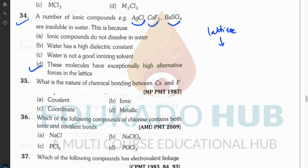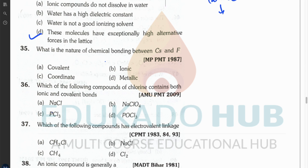Question thirty-five: the nature of chemical bonding between Cs and F. Caesium is highly electropositive and fluorine is highly electronegative, so they form an ionic bond. Since we are studying electrovalent bonding, the question is clearly about ionic bond.